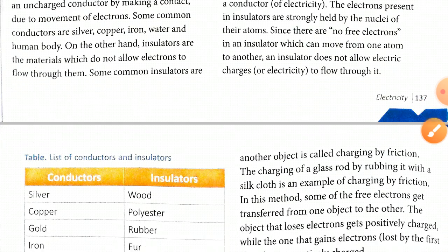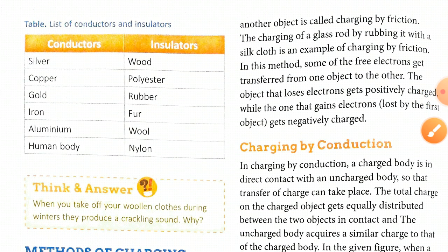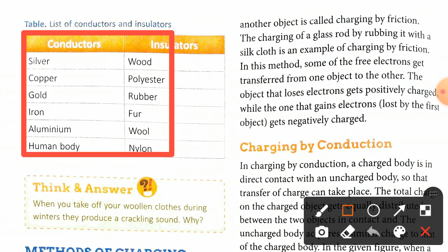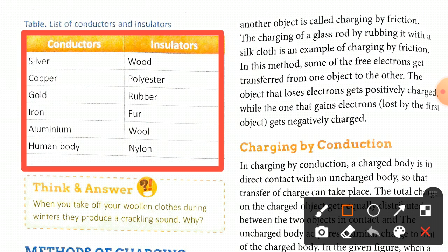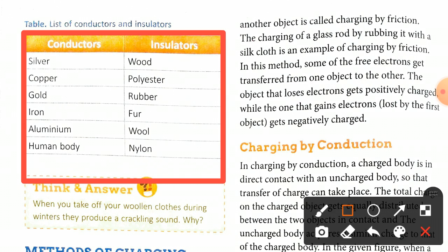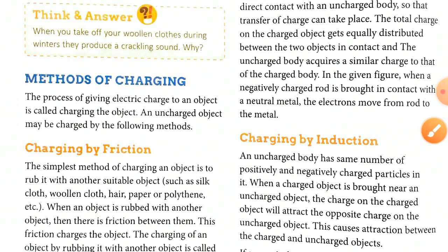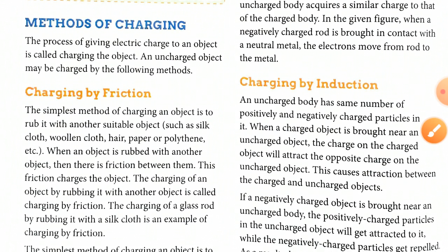Here is a list of conductors and insulators to remember so you can identify each. Conductors include silver, copper, gold, iron, aluminium, and the human body. Insulators include wood, polyester, rubber, fur, wool, and nylon. We will now discuss the methods of charging — the process of giving electric charge to an object is called the charging of an object.